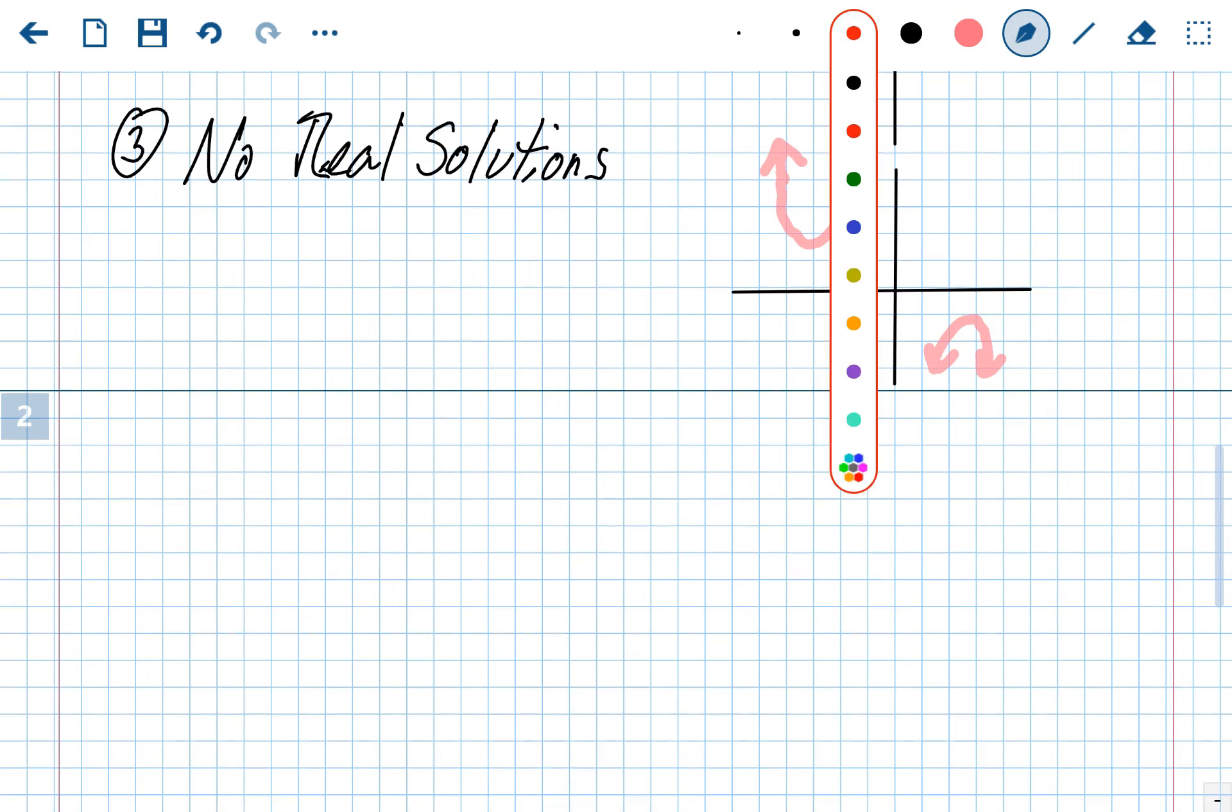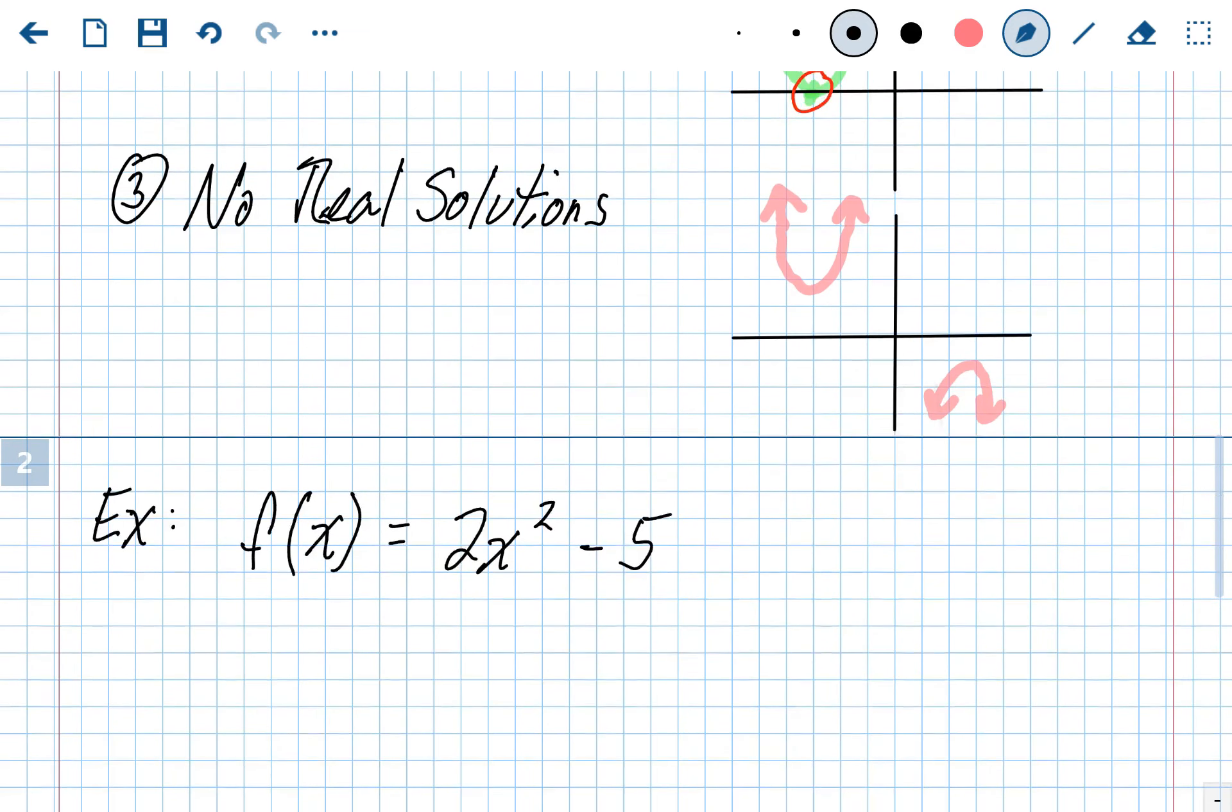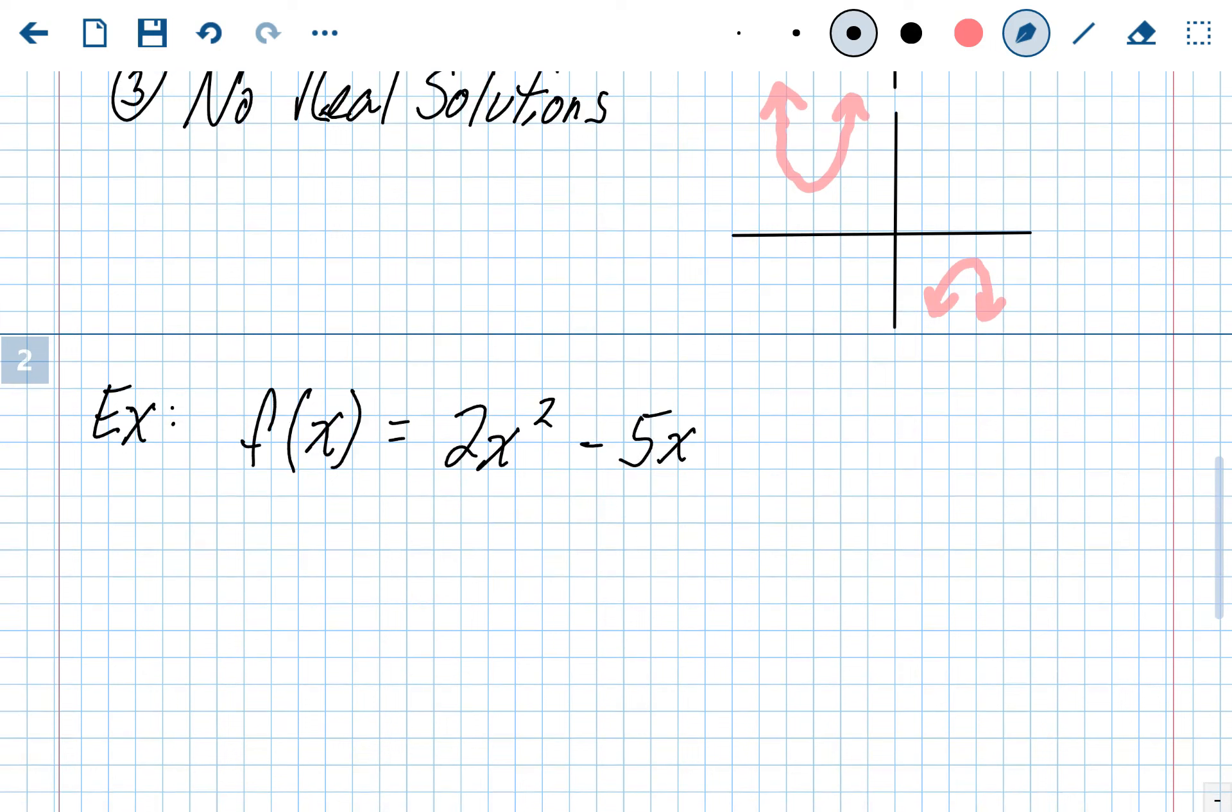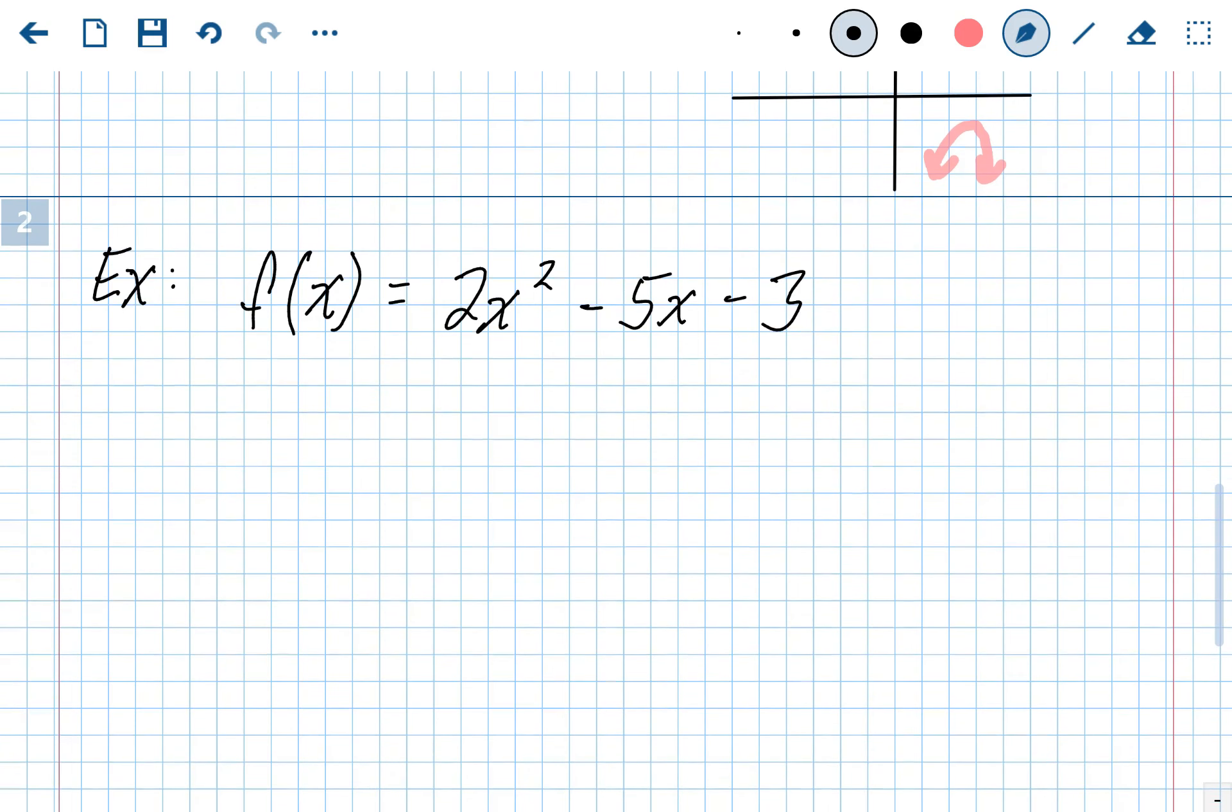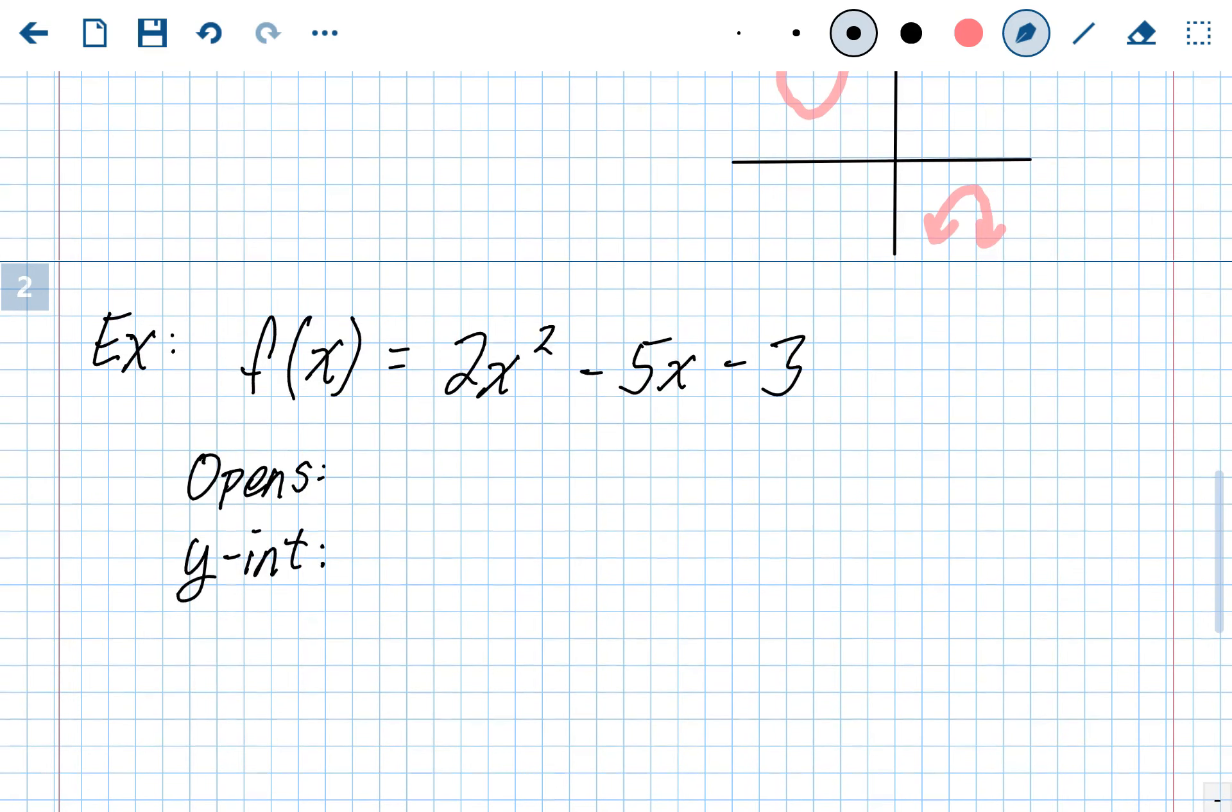Alright, let's do an example of finding the x-intercepts. Let's do it with the equation f of x equals 2x squared minus 5x minus 3. And let's find some information. Let's find the opening. Let's find the y-intercept. I'm going to skip the axis of symmetry and the vertex because this one ends up in fractions. And then lastly, we'll find the new stuff, the x-intercepts.